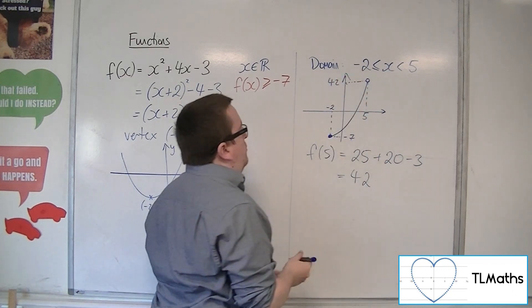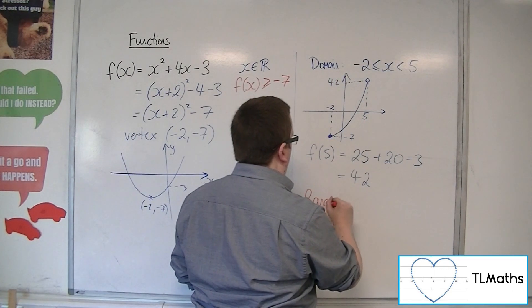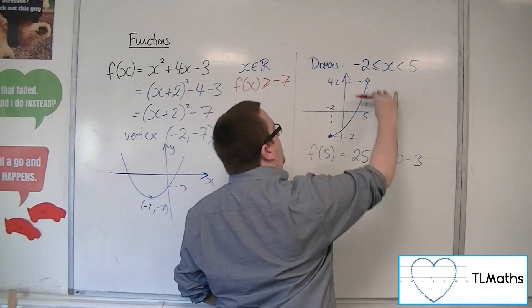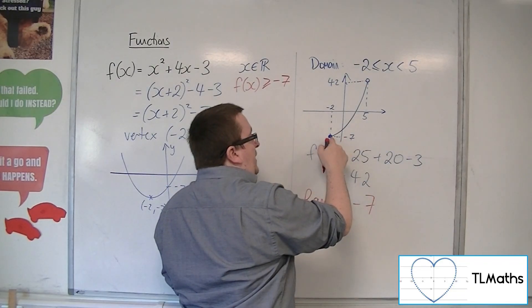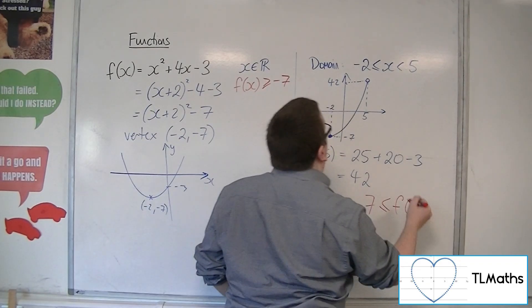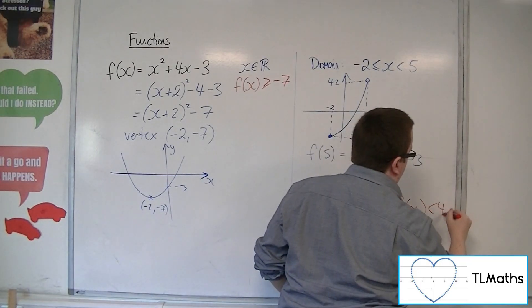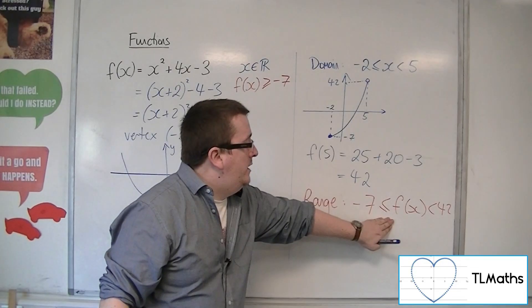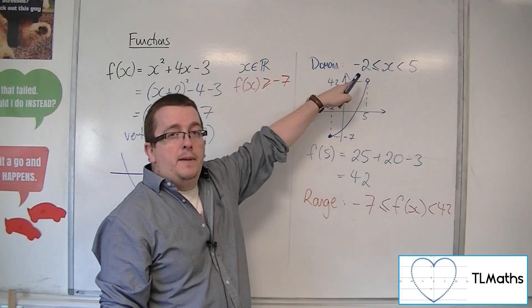So the range for this graph would be from -7 up to 42. So -7 is included because it's a solid dot, but 42 is not included because it's a hollow dot. And that would be the range of the function with this restricted domain.